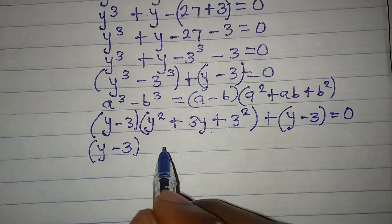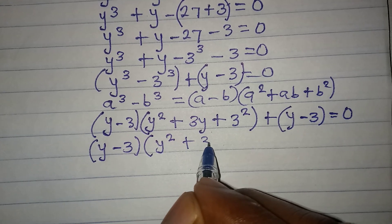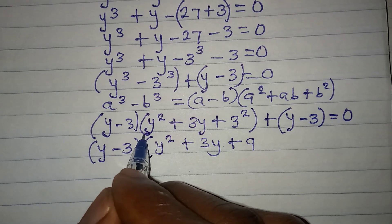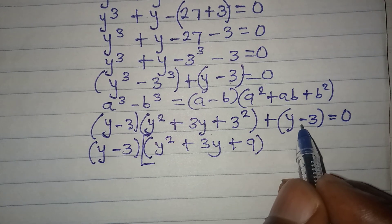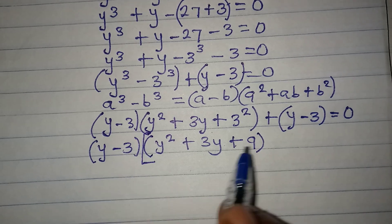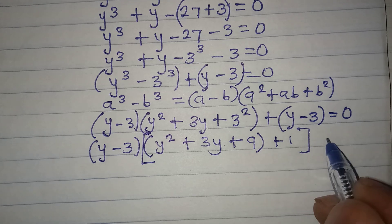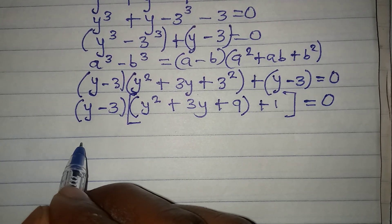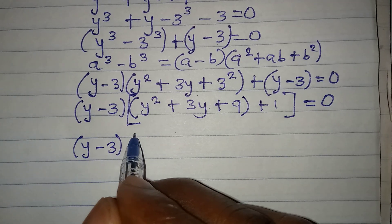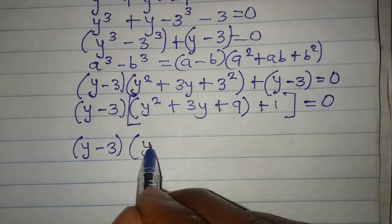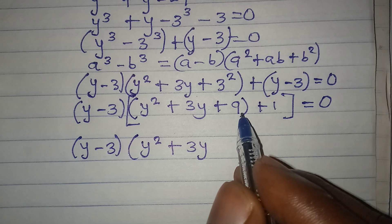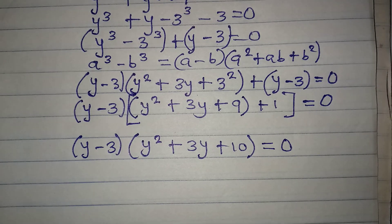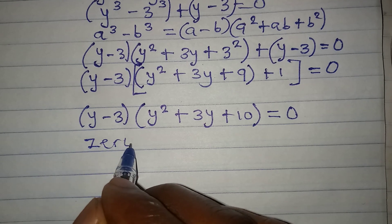So we have y squared plus 3y plus 3 squared, which gives nine. Then y minus 3 divided by y minus 3 gives one, so we have plus one. That gives us y minus 3 times y squared plus 3y plus nine plus one, which simplifies to y minus 3 times y squared plus 3y plus 10, equal to zero.